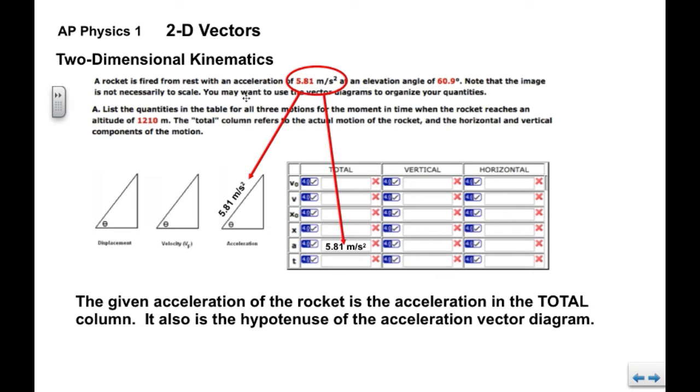Now, the given acceleration is what the rocket actually does, so that's going to go into the total column, which represents what the rocket actually does. It's also going to go onto the hypotenuse of this acceleration vector diagram.